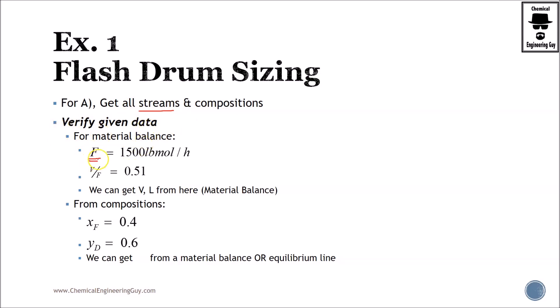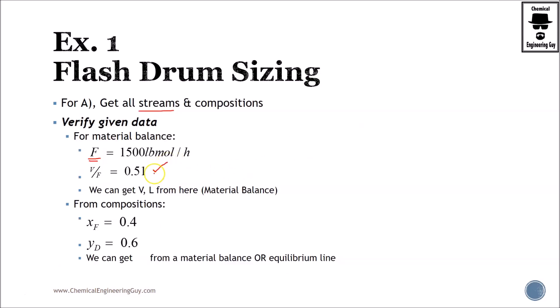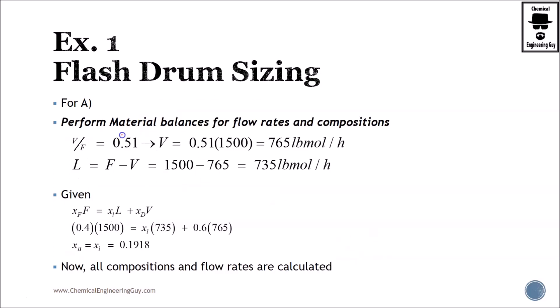First things first, get all the streams and compositions. Verifying the data, I see that we got F and V over F. From the compositions, we got XF or Z, we got YD or YA, we can get XB. It's not here, from the material balance, which will be preferable, or from the equilibrium line if you have it.